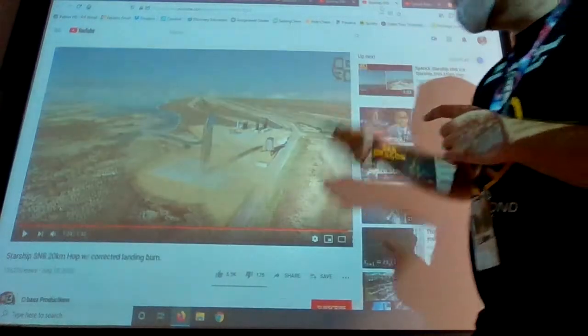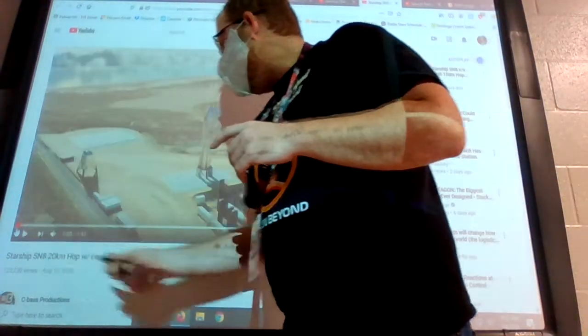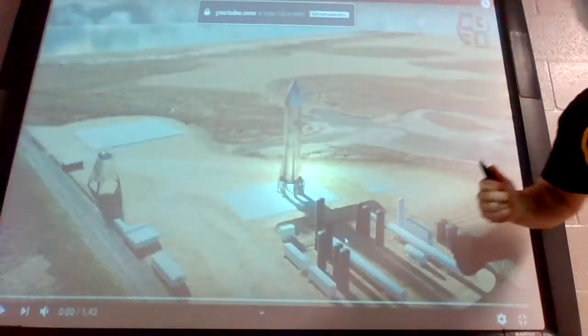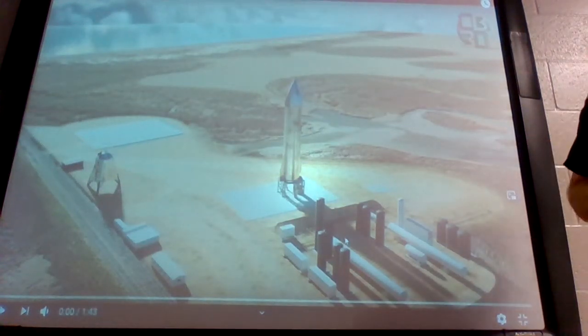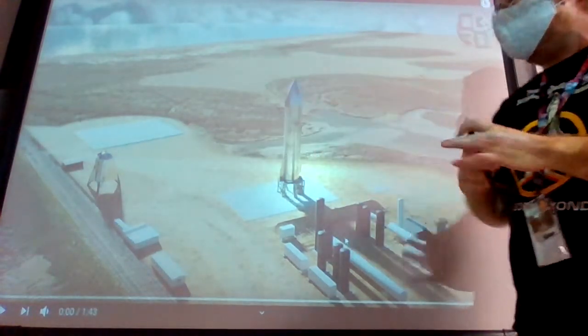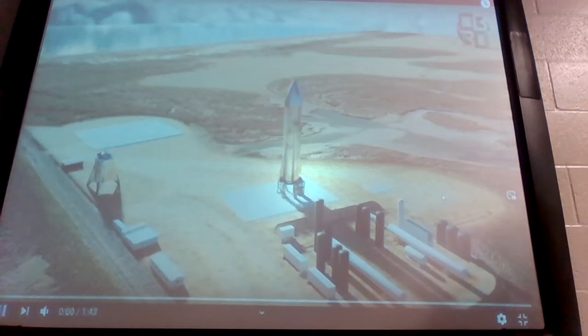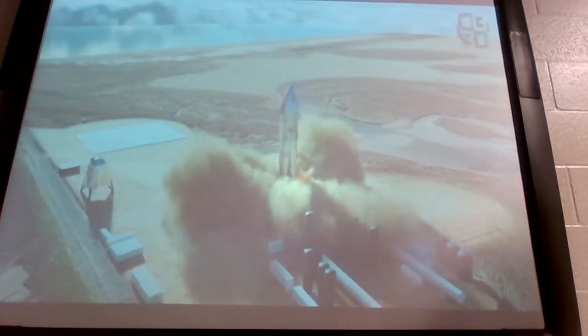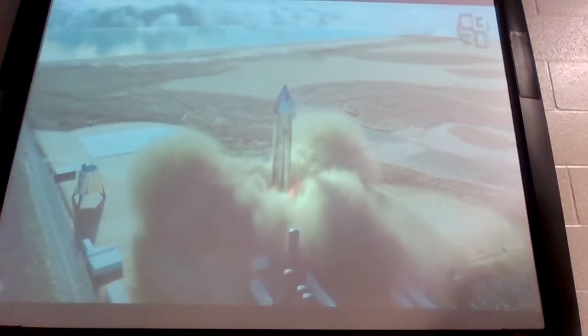This is a simulation. So this is a computer generated simulation of the next launch, which will be serial number eight. It'll have the nose cone, the two fins on top, and the two fins on bottom. And I'm going to let it play and talk about it for a second. They'll have three engines going. And so this thing's going to take off pretty quick.